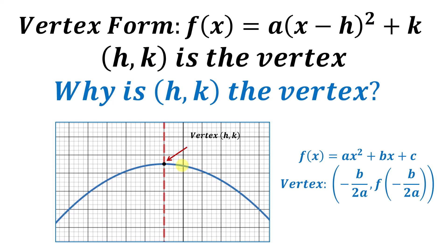Recall in our previous lesson, we talked about the general form of a quadratic function, f(x) = ax² + bx + c, and we explained why the vertex is the ordered pair (−b/2a, f(−b/2a)). We're going to use this to show that in vertex form, (h, k) is the vertex.